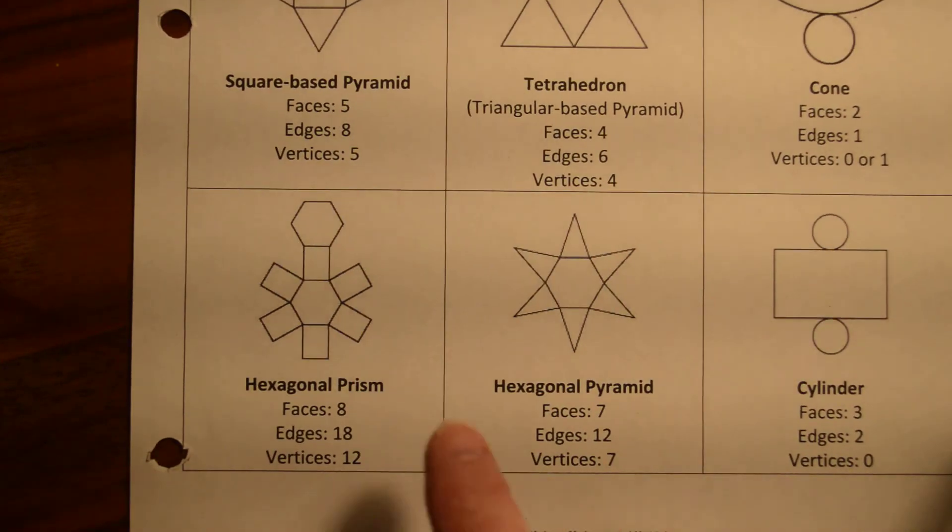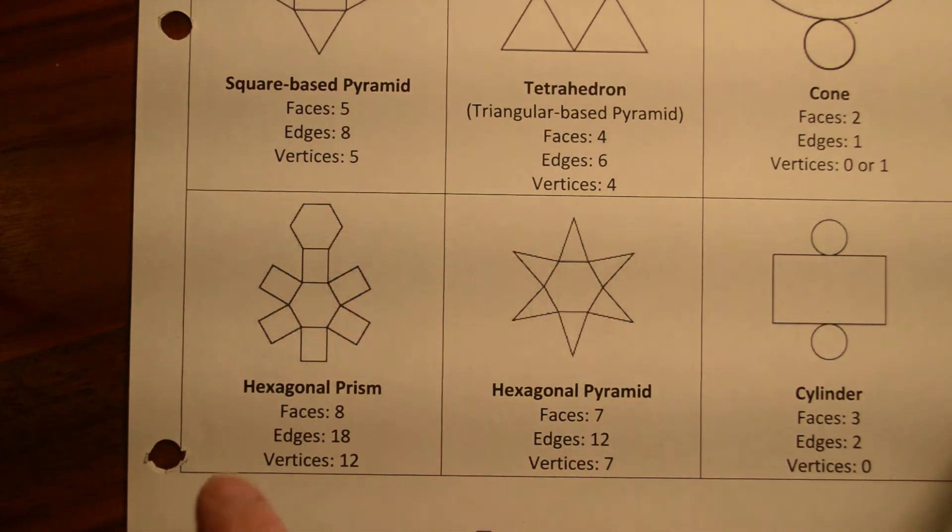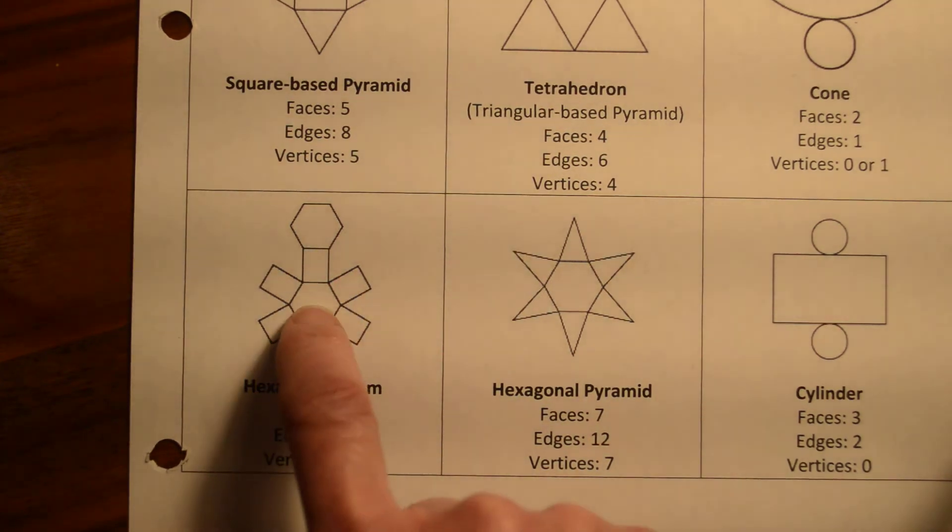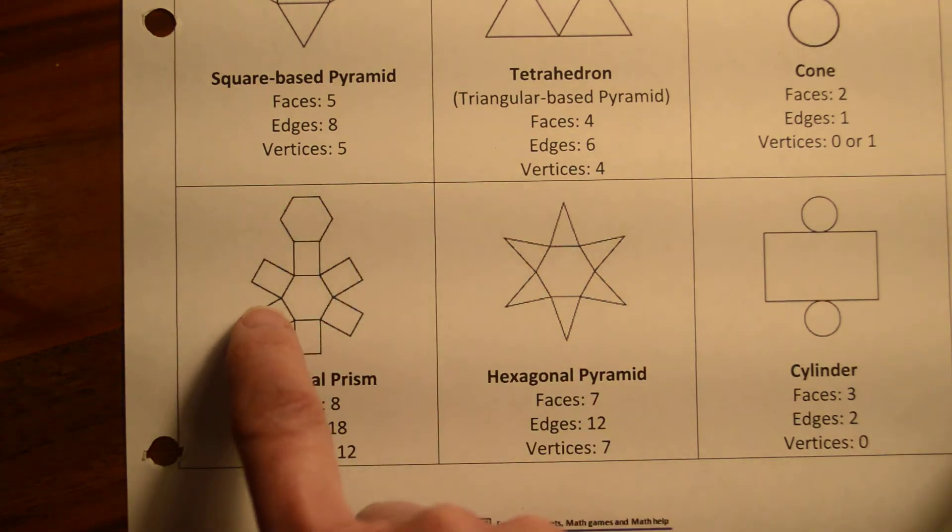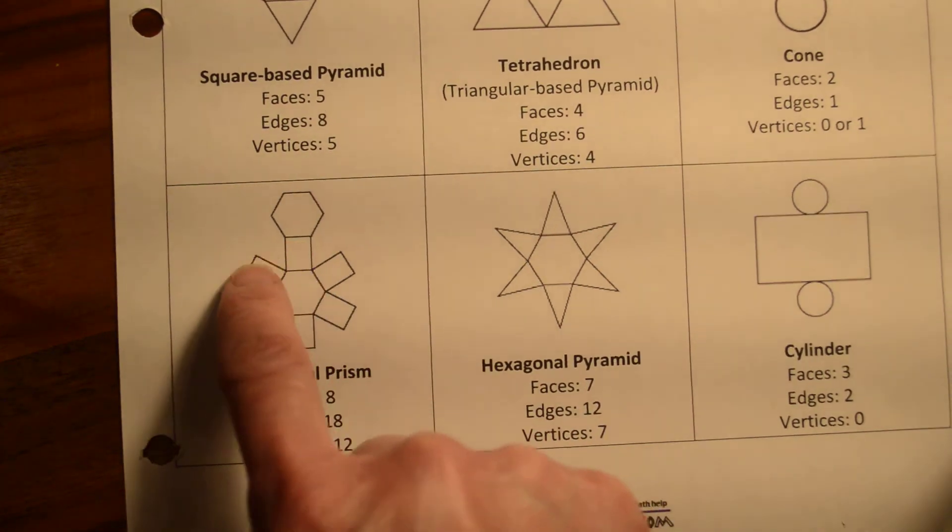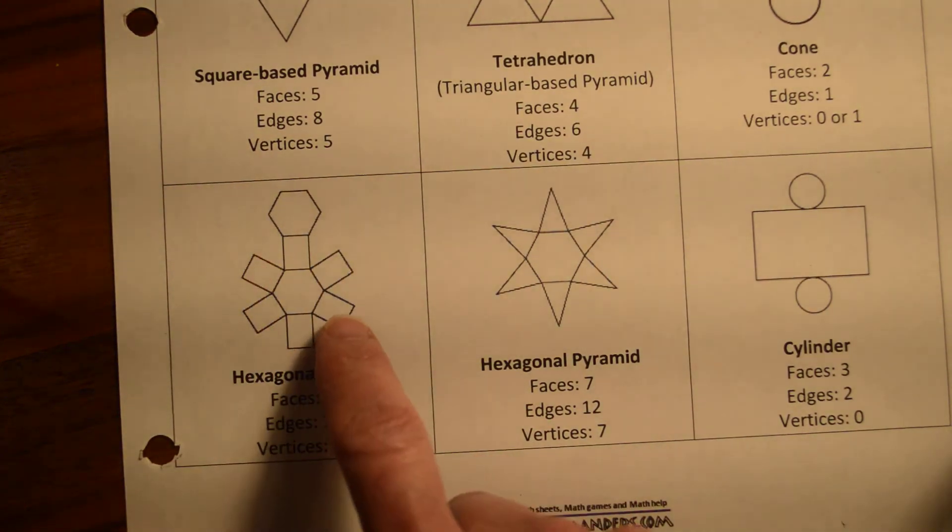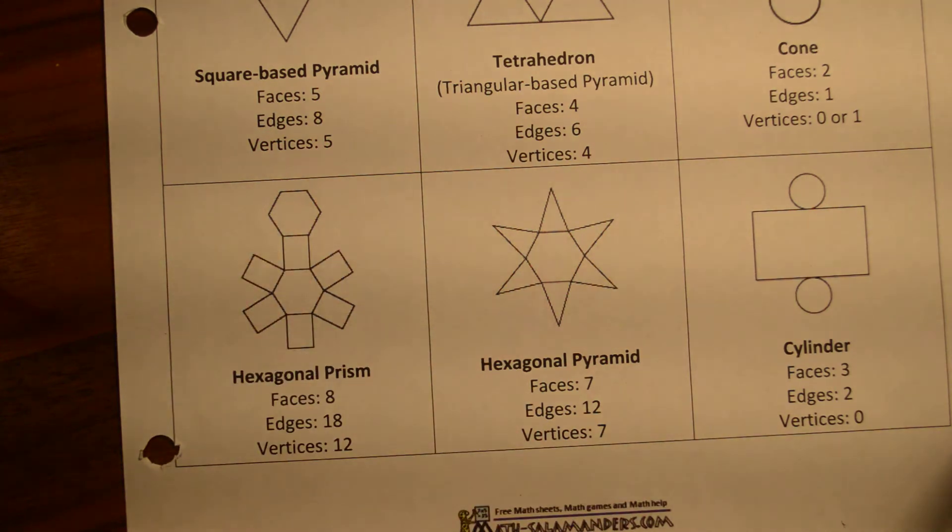Or if we have a hexagonal prism, again, prism means two parallel identical bases. Here are the two bases. And then we've got one, two, three, four, five, six identical rectangular sides that we need to find the area of.